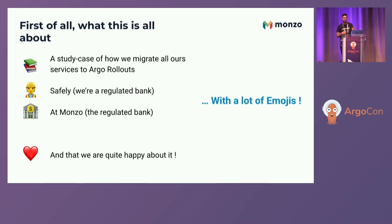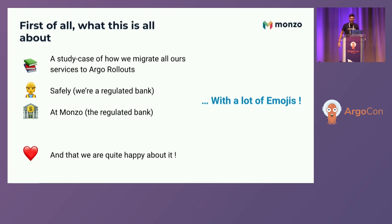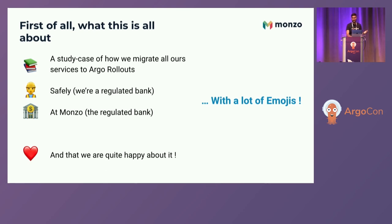So first of all, what I'm going to talk about this morning: this is a case study of how we migrated all of our services to Argo Rollout, making it the default deployment strategy at Monzo, how we did it safely because we're a regulated bank in the UK, and what we actually achieved with Argo Rollout. There will be a lot of emojis because it's part of Monzo branding.